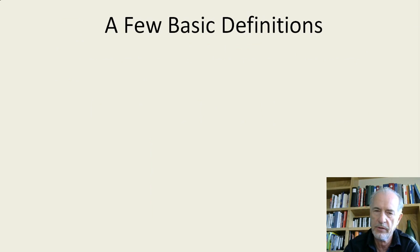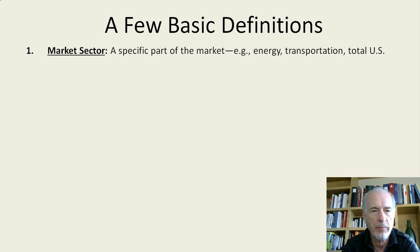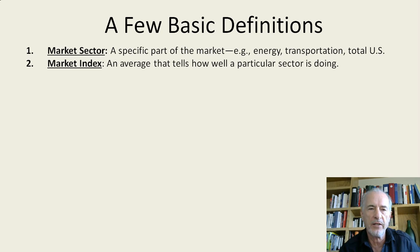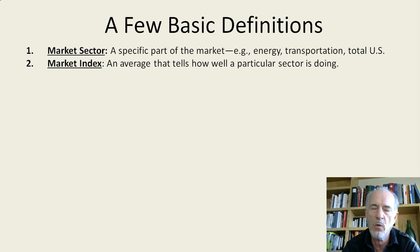The first definition is market sector. Market sector just refers to picking a specific part of the stock markets and focusing on that part. For instance, you might just focus on energy, or you might have just high tech stocks. You might have the total U.S. stock market, the European market or Asian market, etc. For each of these markets, you have what's called a market index, and that's an average of the stocks within that sector. It gives you a good idea of how well that particular sector is doing, because they won't all be doing the same.